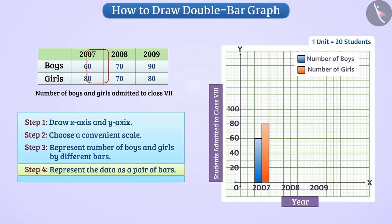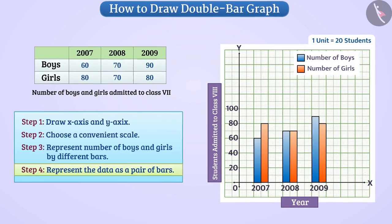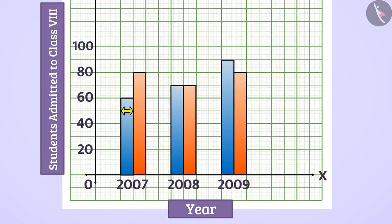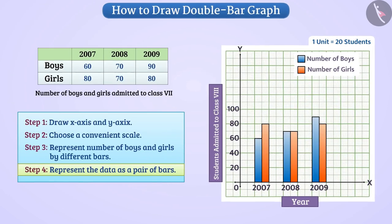Similarly, we will represent the data of all the years in the form of a double bar graph. Remember that we will keep the width of the bars equal and the distance between the pairs of bars will also be the same. In this way, we will get a double bar graph.